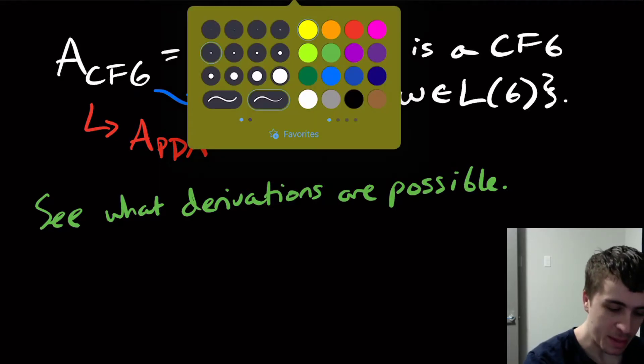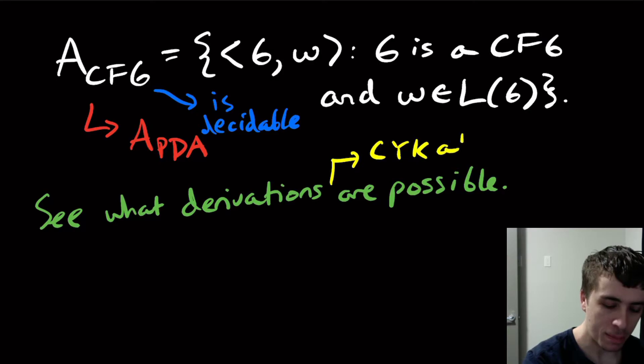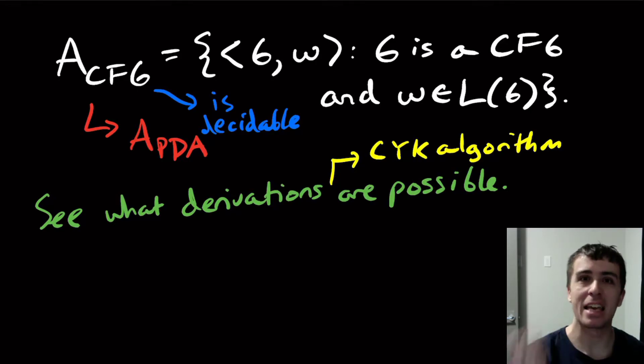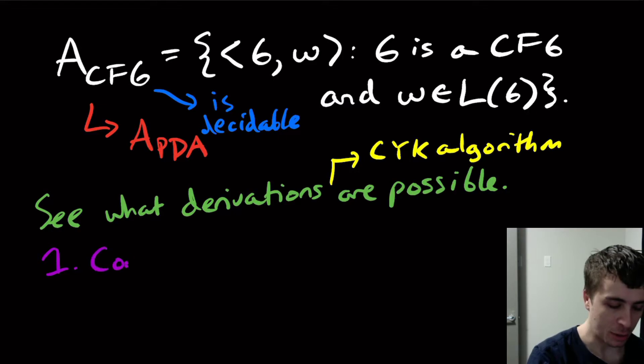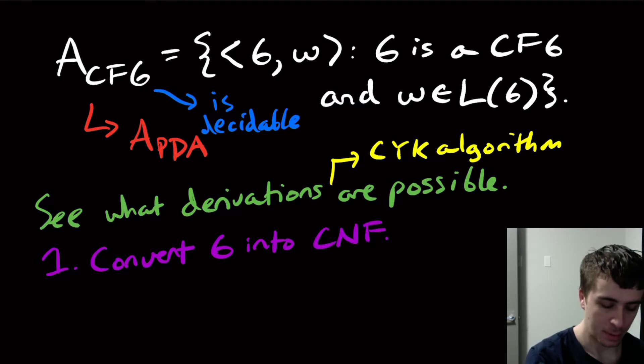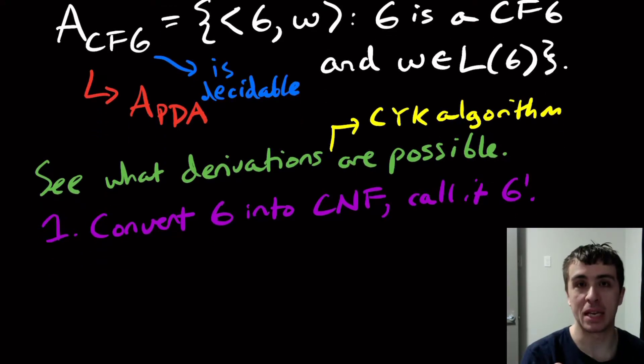So one method that's actually quite popular is the CYK algorithm, which shows that you can solve this problem in n cubed time, where n is the length of the input string w here. But additional processing work is needed in that you need to convert the grammar into Chomsky normal form first. So we're actually going to do the same thing here. So the first step here is to convert G into CNF and then call the resulting grammar G'. So G' is the same language grammar, but just now in Chomsky normal form.